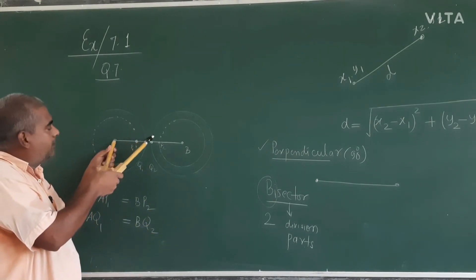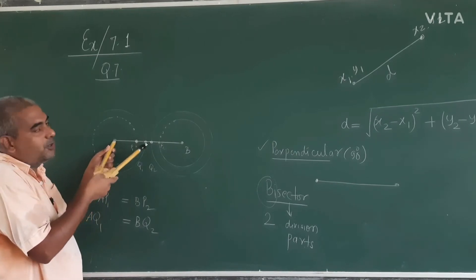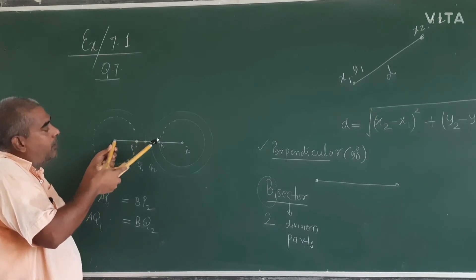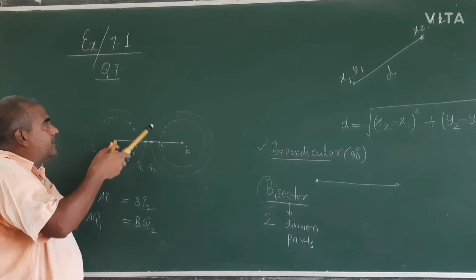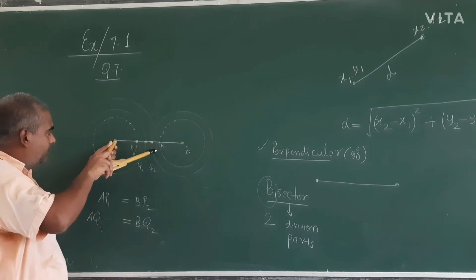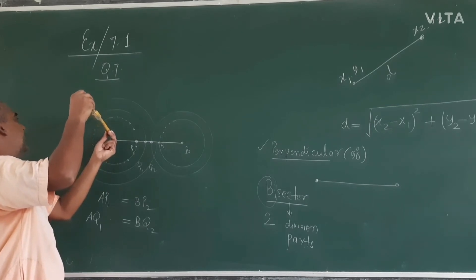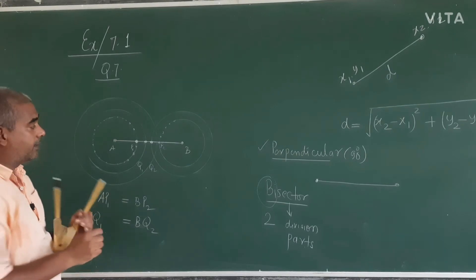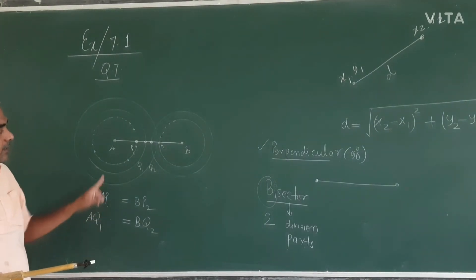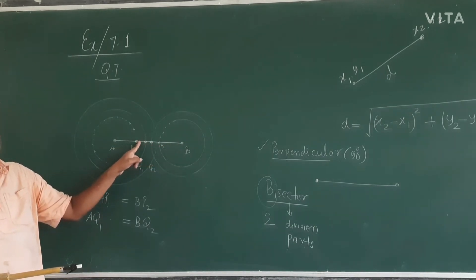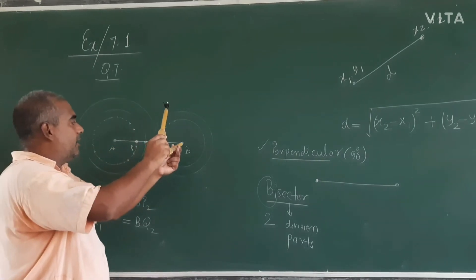Now take a radius somewhat larger — more than half. Because we don't know the exact half, we just increase the radius until the circles start crossing. When you draw arcs with the same radius from both A and B, the circles will cross and give us two intersection points. This forms a triangle-like structure, and with the same radius on both sides.